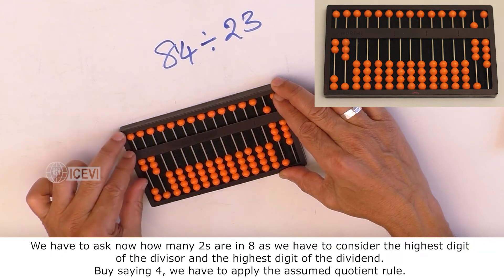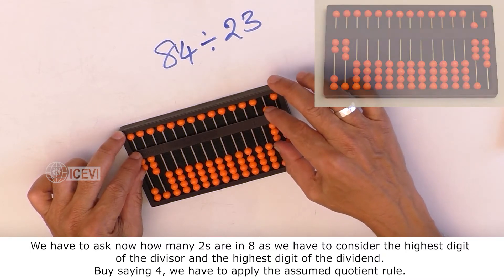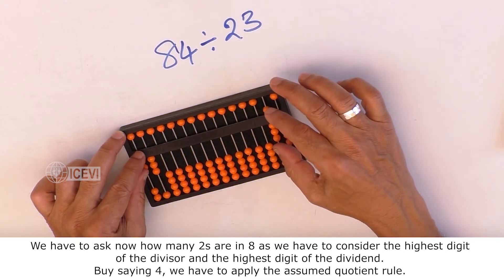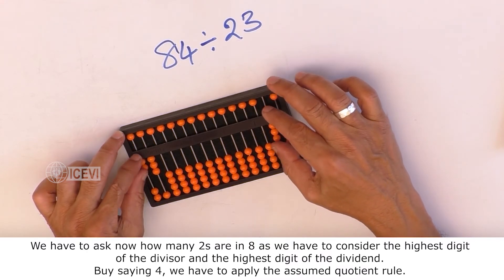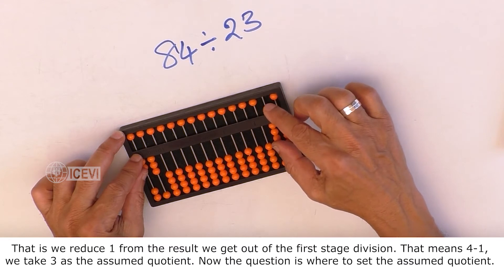We have to ask how many twos are in 8, as we have to consider the highest digit of the divisor and the highest digit of the dividend. By saying 4, we have to apply the assumed quotient rule. That is, we reduce 1 from the result we get out of the first stage of division.